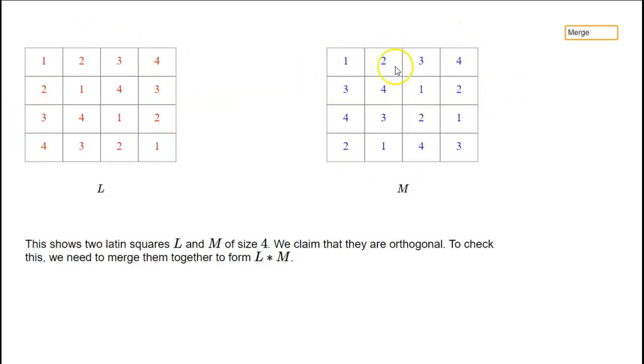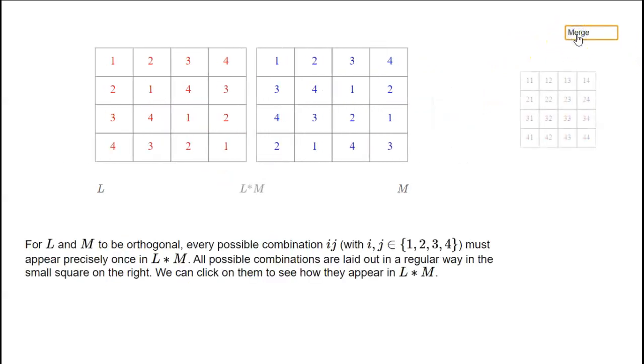Similarly, this M is a Latin square. And there's this definition of what it means for two Latin squares to be orthogonal. To see that, we have to merge the two Latin squares together like this.